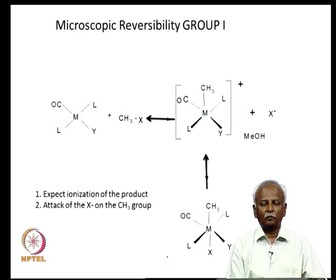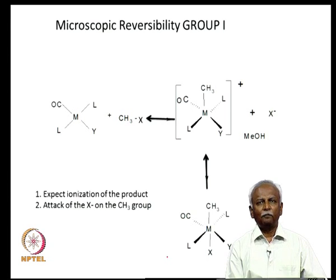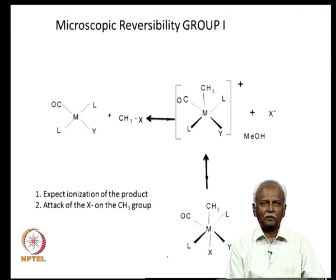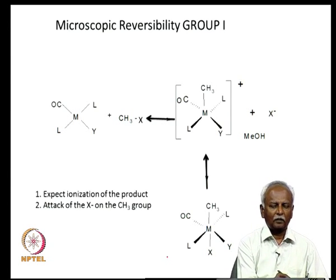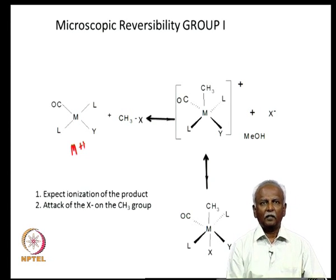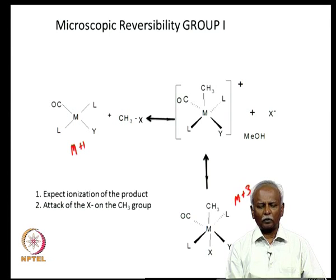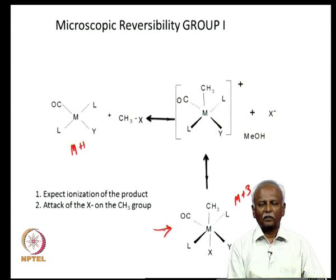This illustrates the principles involved in the reductive elimination process: it is primarily dependent on how stable the oxidized product is. If the oxidized product is extremely stable, reductive elimination will be a high energy process. Let us now take the group 1 addenda and try to explain how reductive elimination might take place. The principle of microscopic reversibility suggests that if a reaction proceeds in a particular path, then the reverse reaction — reductive elimination — should retrace the steps which it took when it formed the oxidized product.